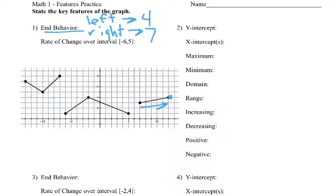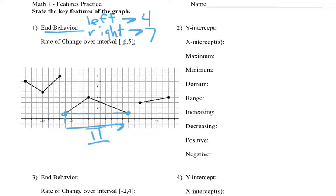Now we'll do rate of change. First thing with rate of change is I find those x-values. So x of negative 6 — my point is right there on the graph at negative 6. My other x-value is 5, which is right there. Find the slope — I go to the right 11, and I don't go up or down. So that's 0 over 11, which is just 0. So my rate of change is 0.